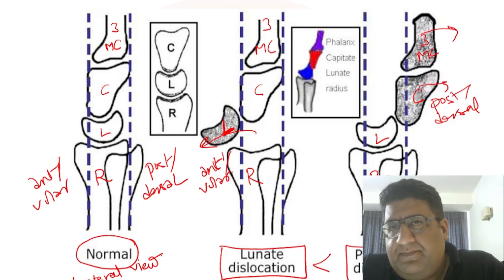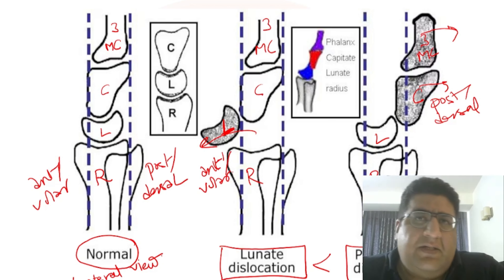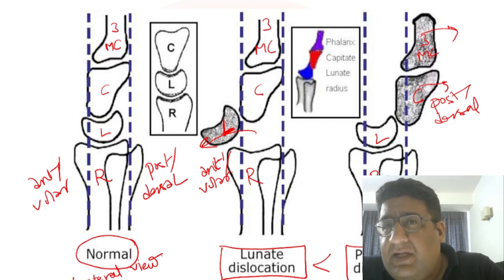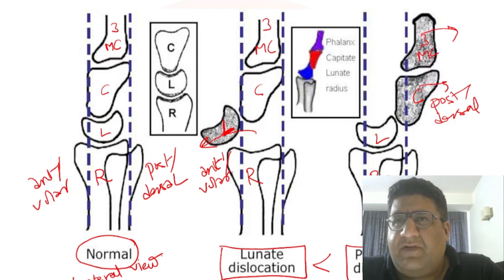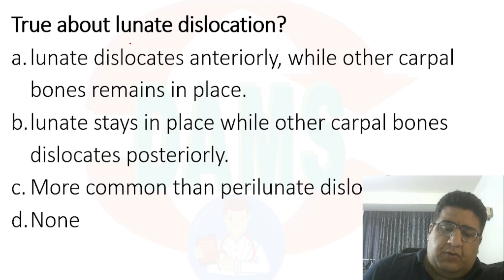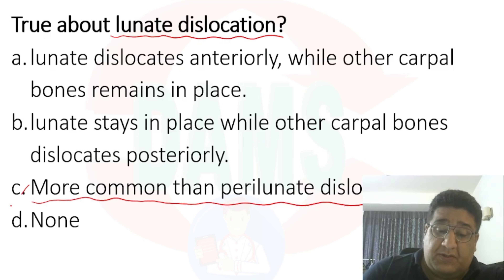I hope that line diagram makes some sense. Clinically, perilunate dislocation is always more common than lunate dislocation. I hope I made this concept clear — this is the only and easiest way to understand the topic. Otherwise, if you keep reading theory in textbooks, you will end up confused.